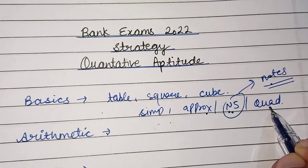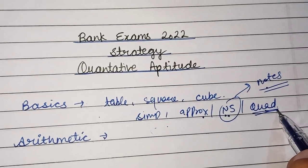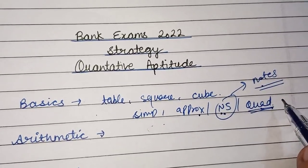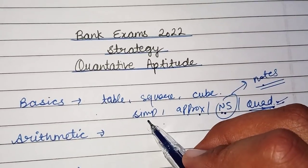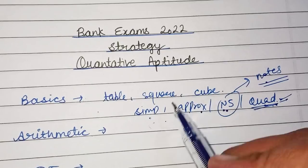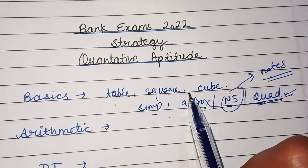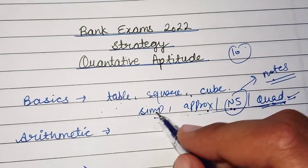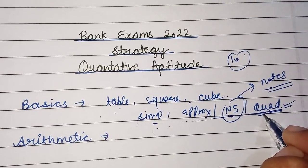For quadratic equations, I would suggest you follow only one teacher's videos, because if you watch different teachers, you will get confused since all teachers have different methods. This will take around one week to cover all four chapters. These three to four things you can note on one paper and read them daily. After that, do 10 simplification, 10 approximation, 10 wrong number series, 10 missing number series, and 10 quadratic — this set of 50 questions you have to practice daily, daily without fail.